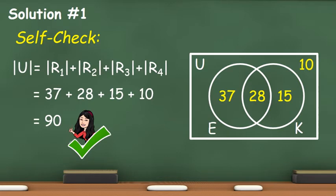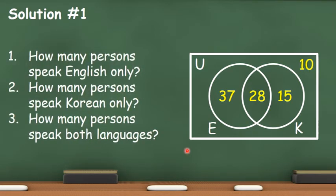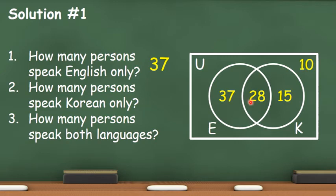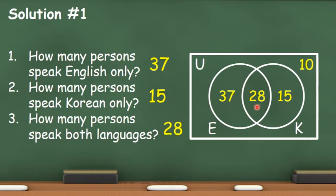Congratulations! So now let us answer the three main questions in our problem. Number 1: how many persons speak English only? This is represented by R sub 1, so there are 37 persons who speak English only. Number 2: how many persons speak Korean only? This is represented by R sub 3, meaning there are 15 persons who speak Korean only. Third: how many persons speak both languages? This is represented by R sub 2, meaning there are 28 persons who can speak both English and Korean.